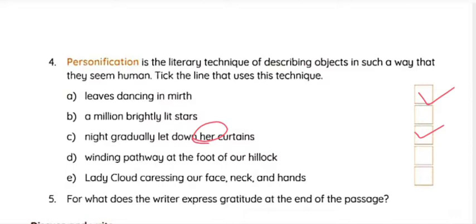Next, 'winding pathway at the foot of her hillock' — there is no personification here. But 'lady cloud caressing her face, neck and hands' — the writer used 'lady cloud'. Can you find a real lady cloud? There are no lady clouds or gent clouds — only clouds which don't have life. But the writer gave life to the cloud as a girl. So this is personification. These are the three personifications we could find.